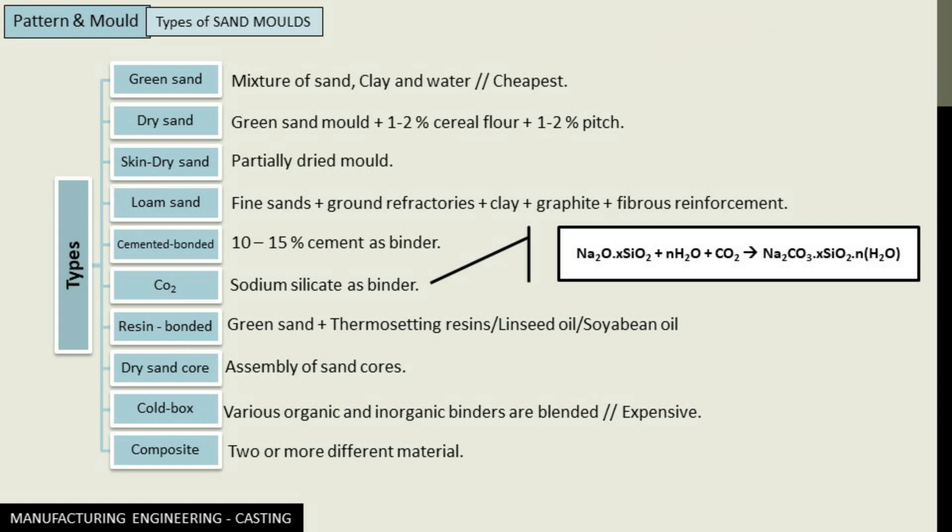Then comes cemented bonded molds. Here the molding sand contains 10 to 15% of cement as the binder of the structure. Such kinds of molds are very strong and hard, and hence they are very much difficult to break away.